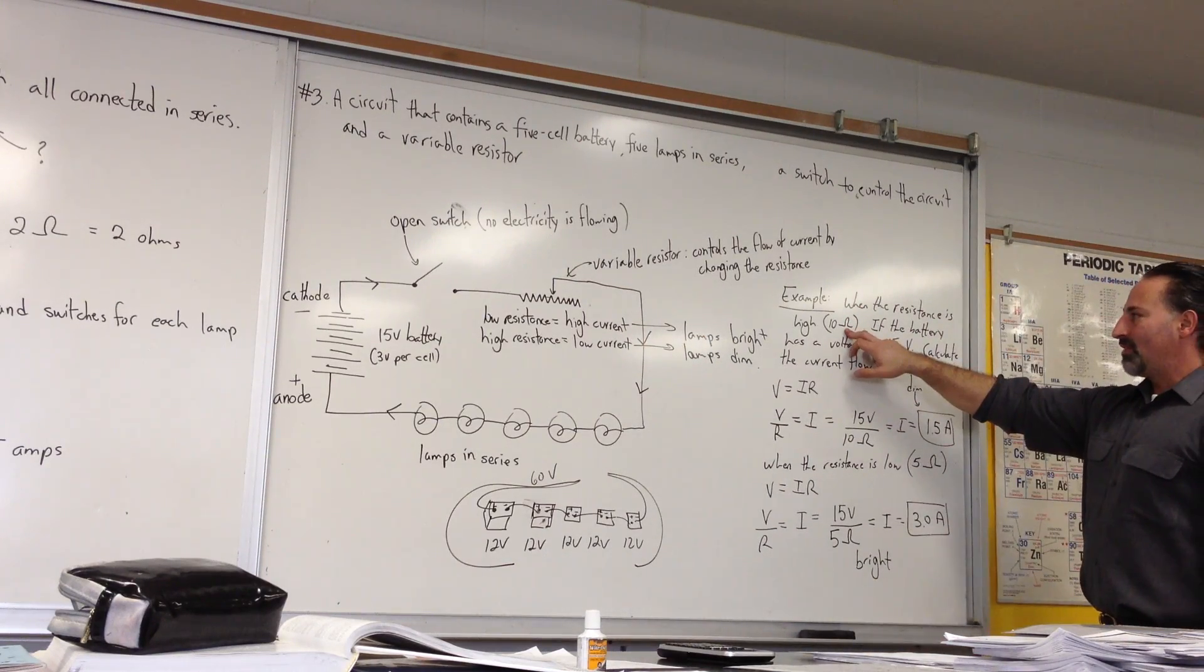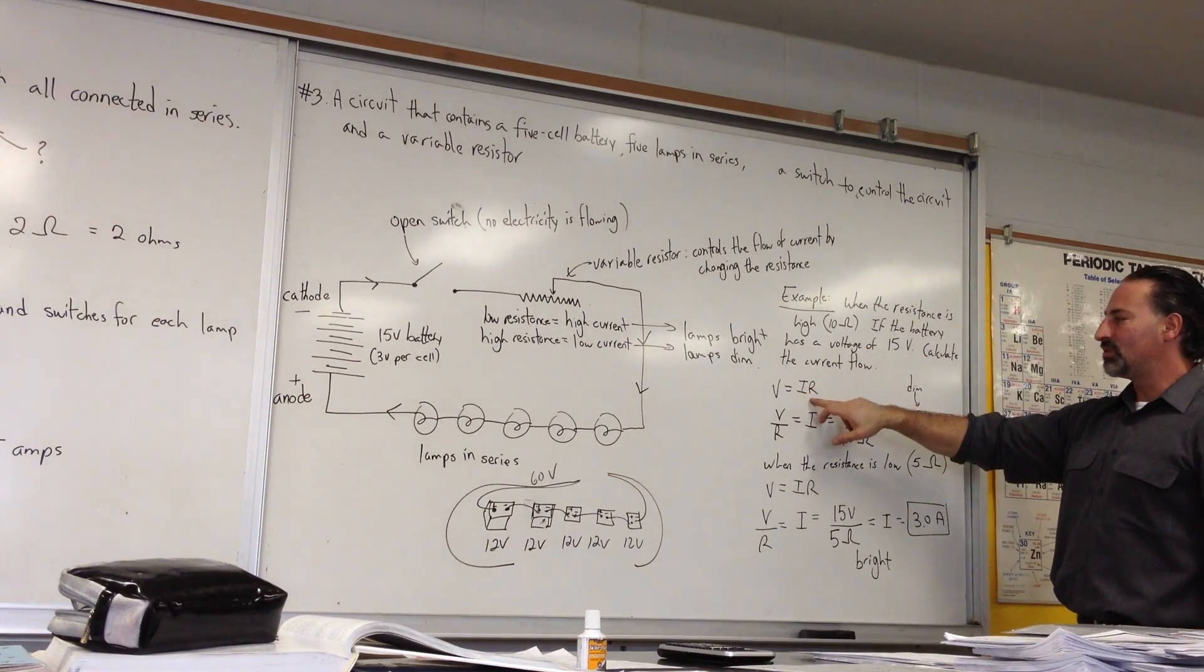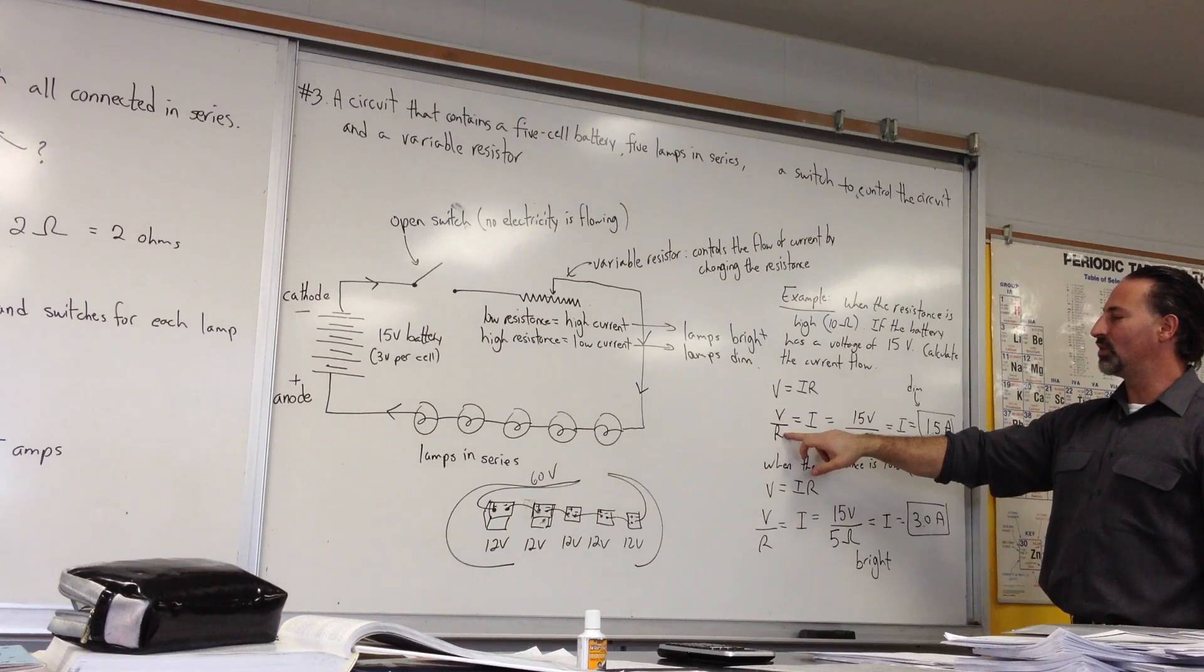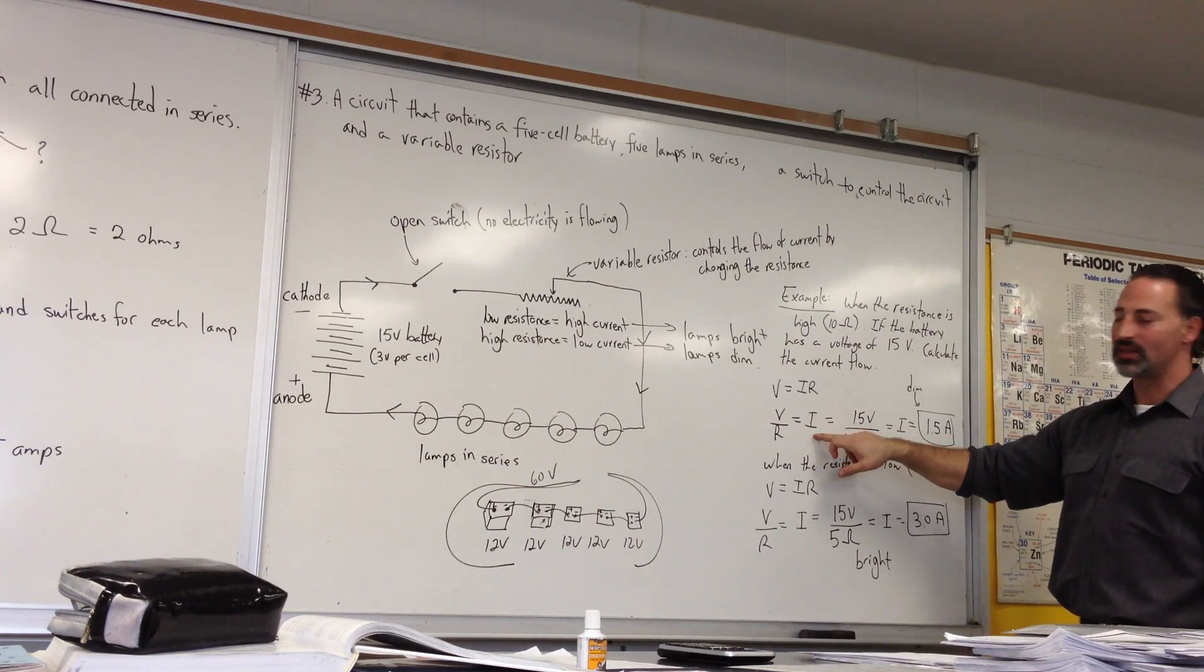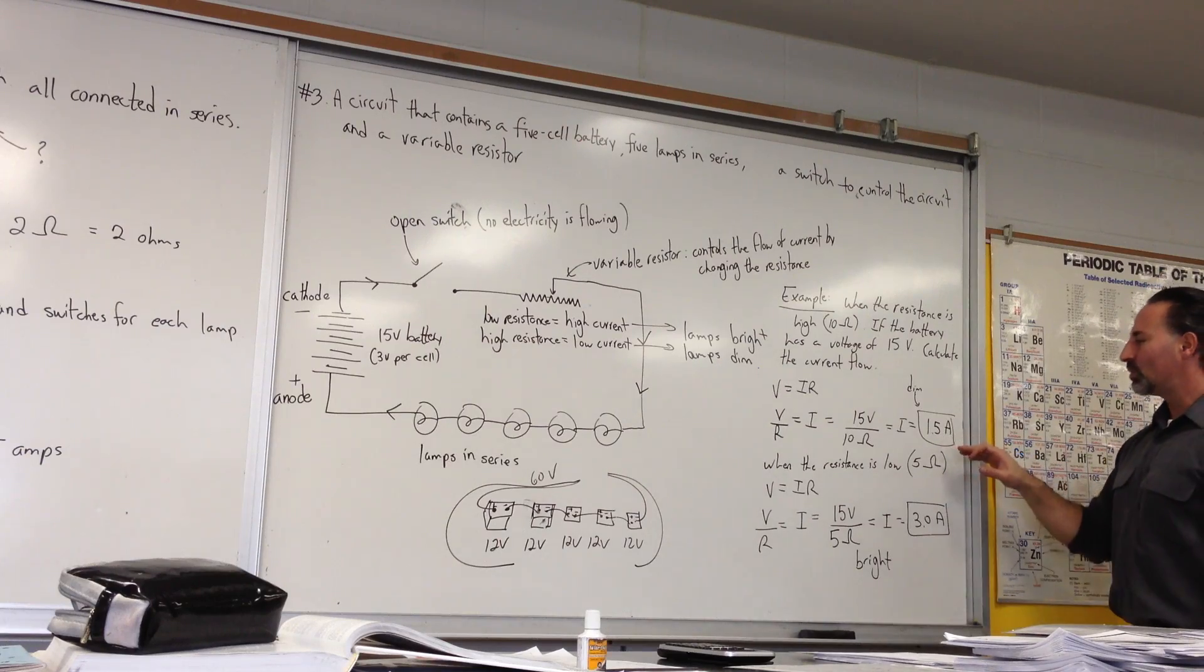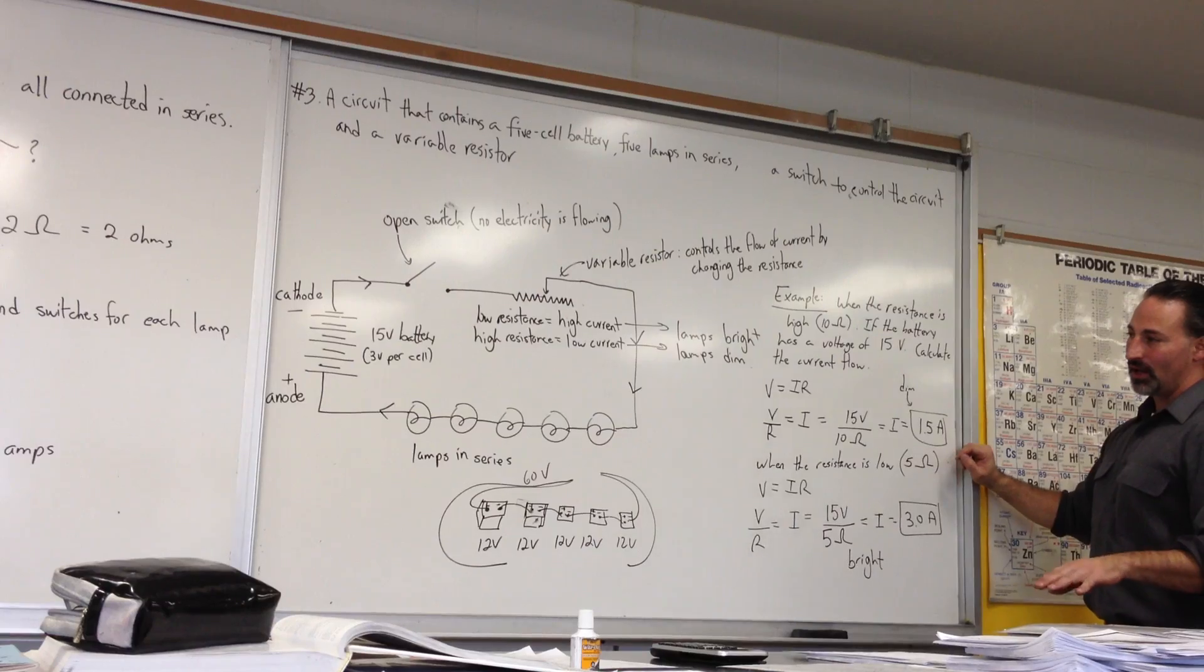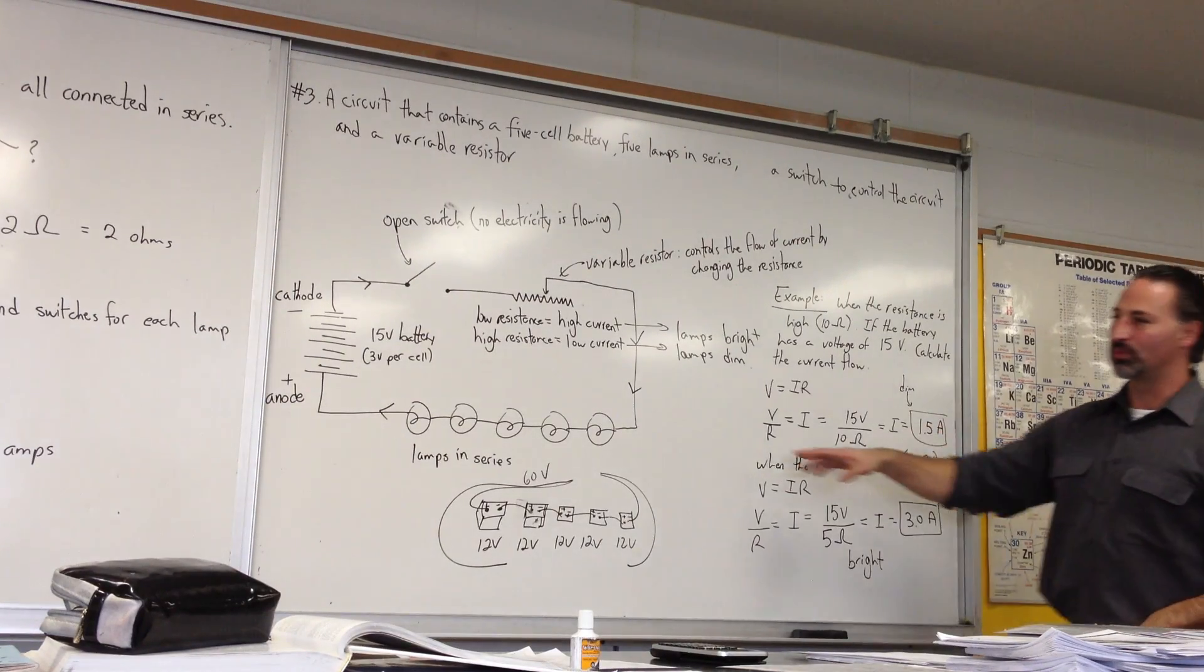And suppose it gave us a 10 ohm resistance. If the battery has a voltage of 15 volts, it calculates the current flow. Using V is equal to IR, we solve for V over R, that gives us I. 15 divided by 10 gives us 1.5 amps. So we'll assume that if we have 1.5 amps flowing through the circuit, that's a lesser amount of current, so the lamps will burn dimly.